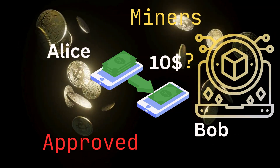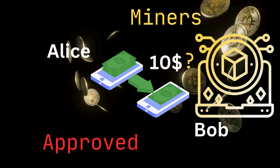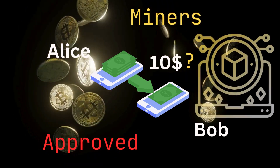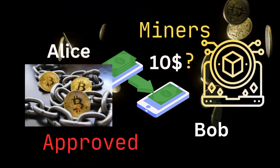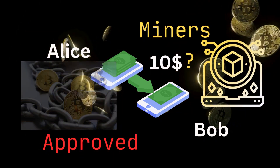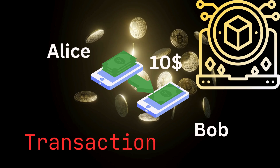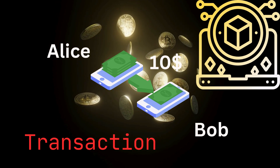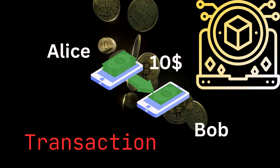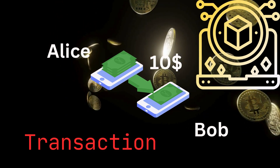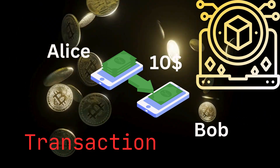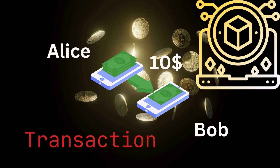The block is connected to the previous block, forming a chain — hence, blockchain. Step 5 — Bob receives the money: once the transaction is added to the blockchain, Bob sees $10 in his wallet. The transaction is permanent and cannot be changed.